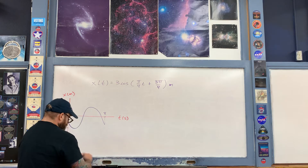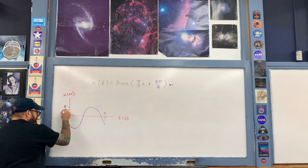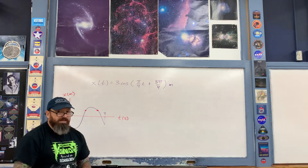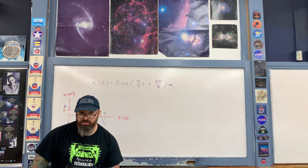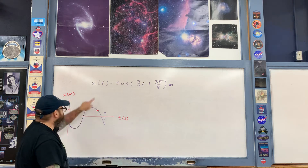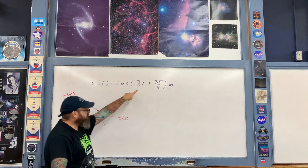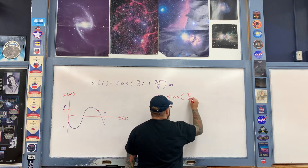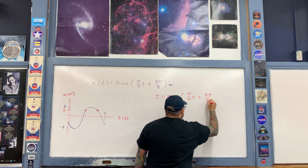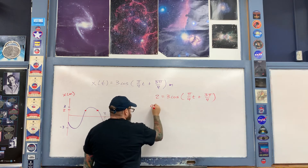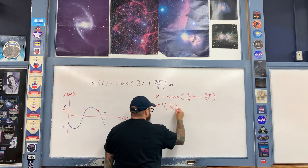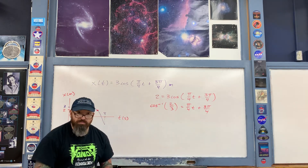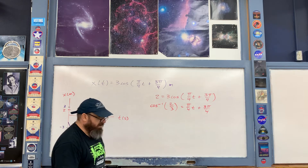A position of 2 meters appears at two points on the graph. Let's find the first time by setting x = 2 and solving for t. We divide by 3 and take the inverse cosine of both sides. In radian mode on the calculator, I compute inverse cosine of 2/3, subtract 3π/4, and cross-multiply by 4/π. This gives t1 = negative 1.93 seconds.